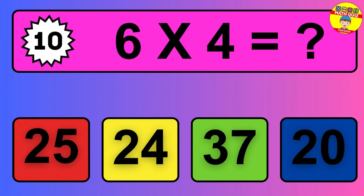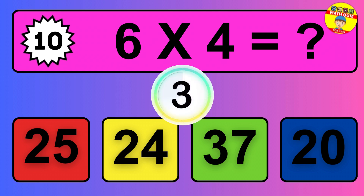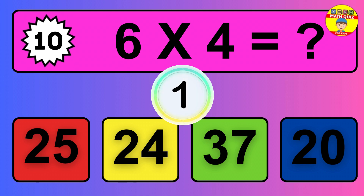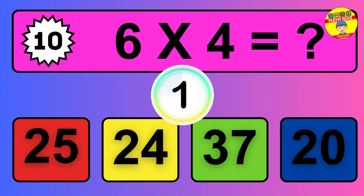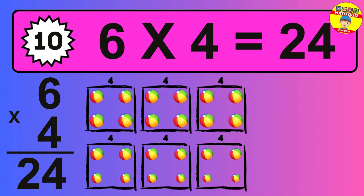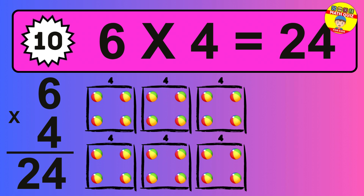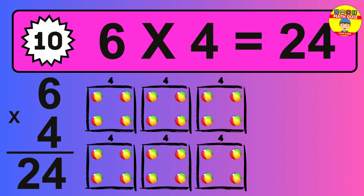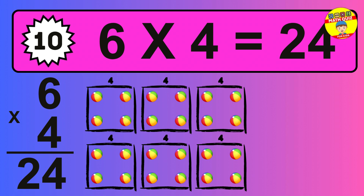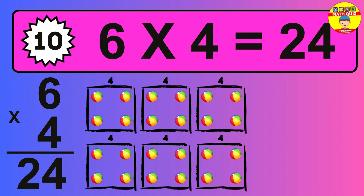Question 10. 6 times 4 equals what? So the answer is 6 times 4 is 24. To calculate, we have 6 groups with 4 balls each one. So how many balls do we have? 24 balls.